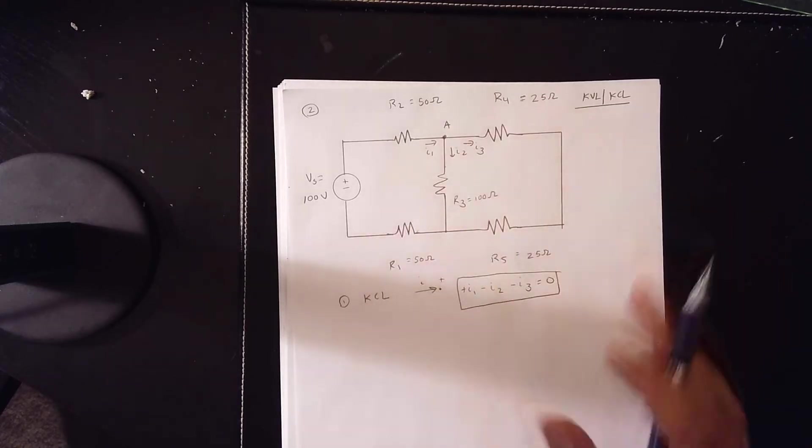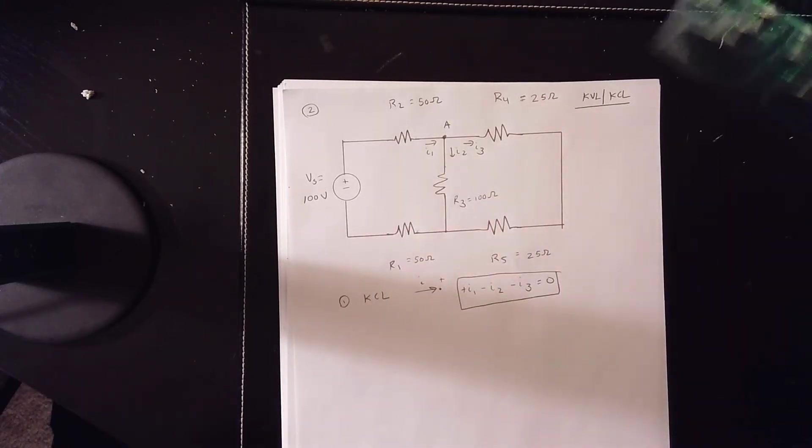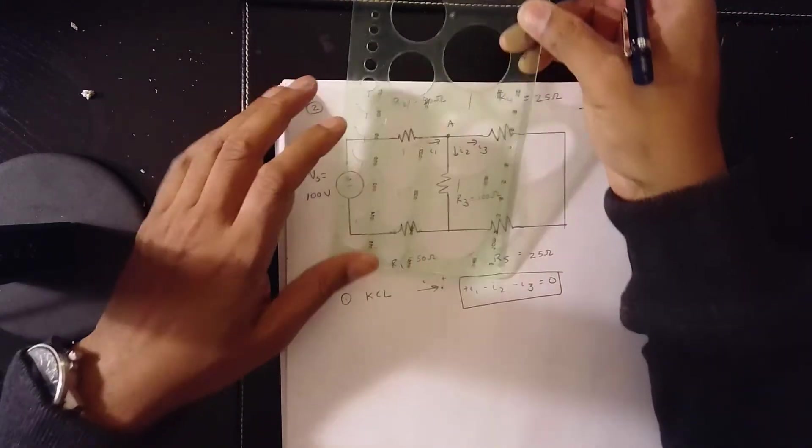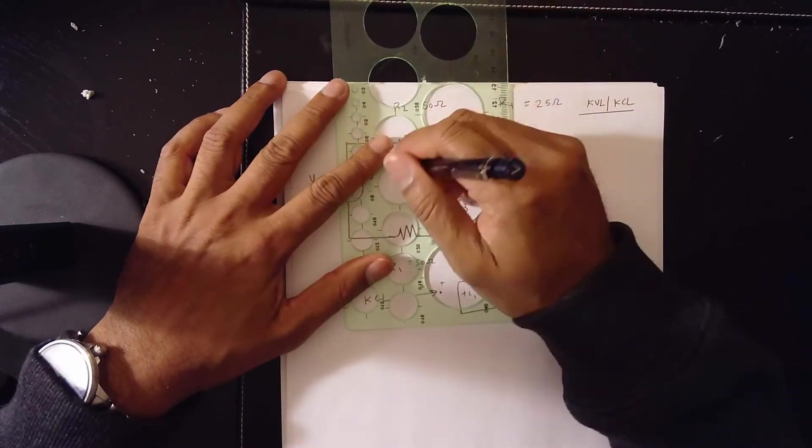From the current, you will create now the voltages, and the loop you want to follow is this voltage loop.